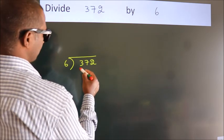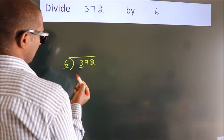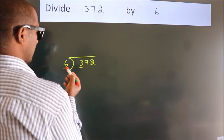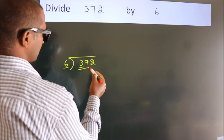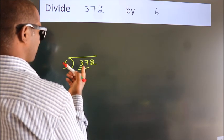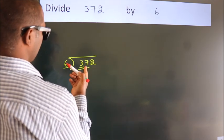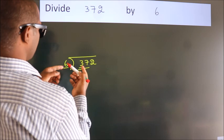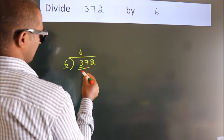here we have 3, here 6. 3 is smaller than 6, so we should take two numbers: 37. A number close to 37 in the 6 table is 6 sixes, 36.